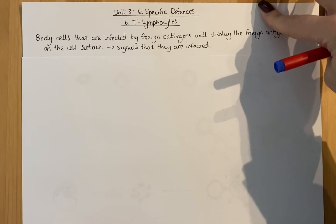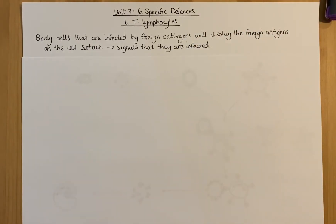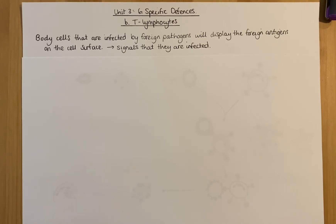Lymphocytes are white blood cells that defend against infection. They have specific receptor proteins on their surface that will detect foreign antigens — that's a quick recap. When it comes to T lymphocytes, which is one type of lymphocyte, T lymphocytes are involved in determining whether something is foreign or not foreign — so self or non-self.